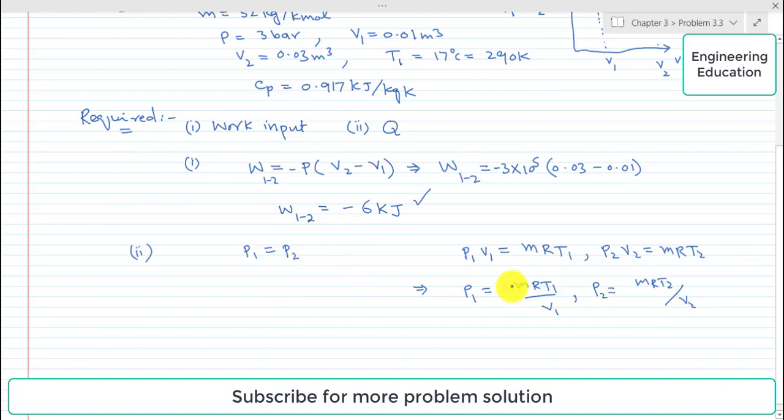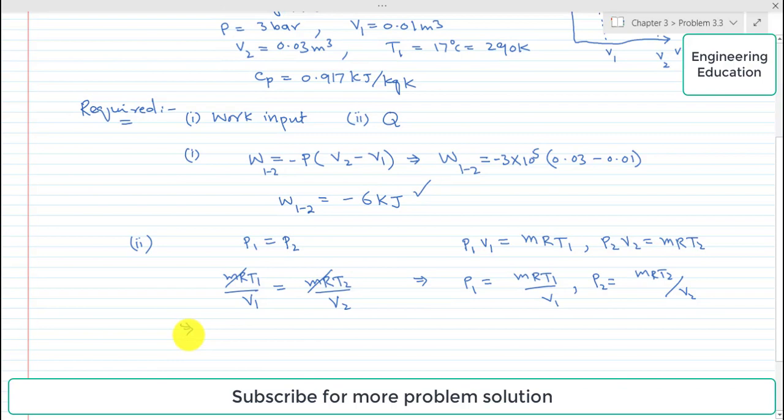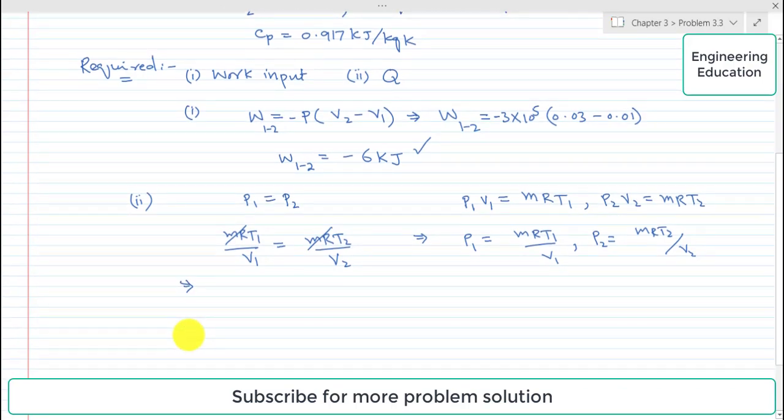If left hand side are equal to each other, then right hand side will also be equal to each other. We can write this MRT1 over V1 is equal to MRT2 over V2. MR is constant in both, so we can write and rearrange this equation for T2. T2 is equal to T1 over V1 into V2.